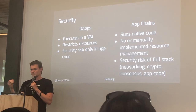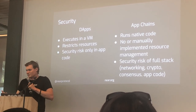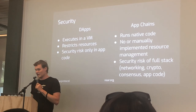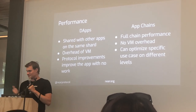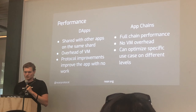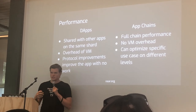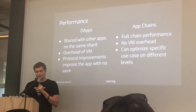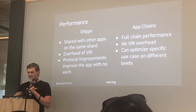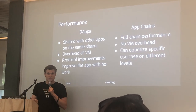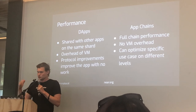Now let's go to performance — that's where app chains actually win. The main benefit is you get performance of the full chain. If you're running your own application and performance is key, there are no other transactions happening and no limitations. The VM does have overhead — EVM is relatively slow, WebAssembly is faster but still pretty slow — so you do remove that boundary. With a dApp, you can rely on the protocol continuously improving, maybe accelerating the VM or figuring out better tricks to speed it up.